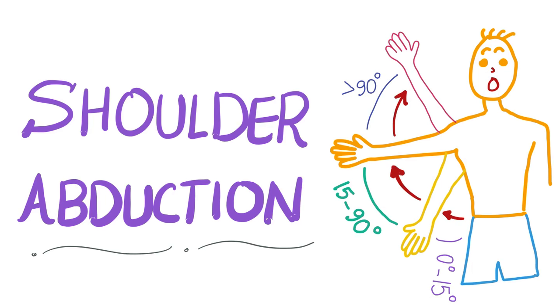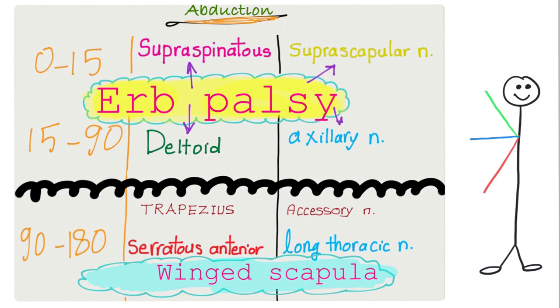Medicosis Perfectionalis. Let's review some anatomy. First, let's talk about the normal. To abduct your arm from 0 to 15 degrees, from here to here, you need a muscle called supraspinatus.